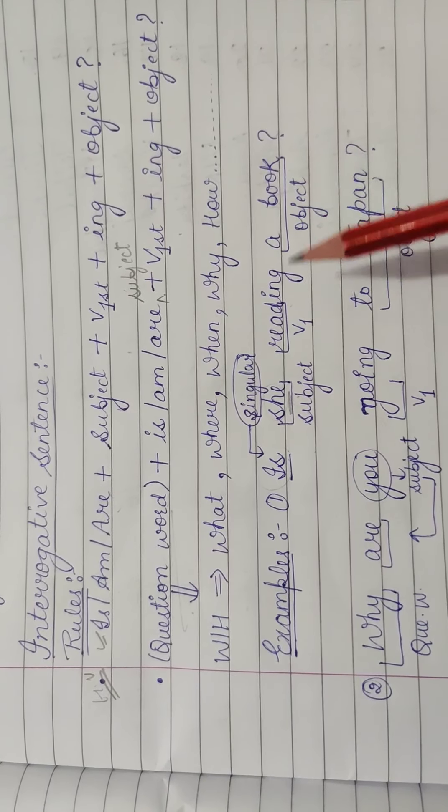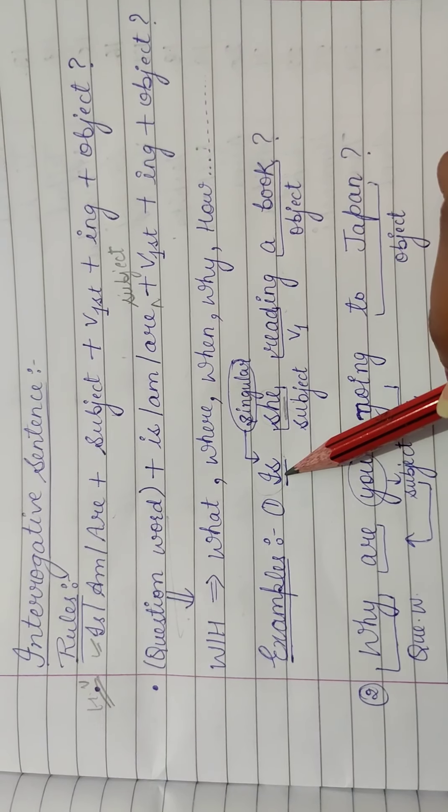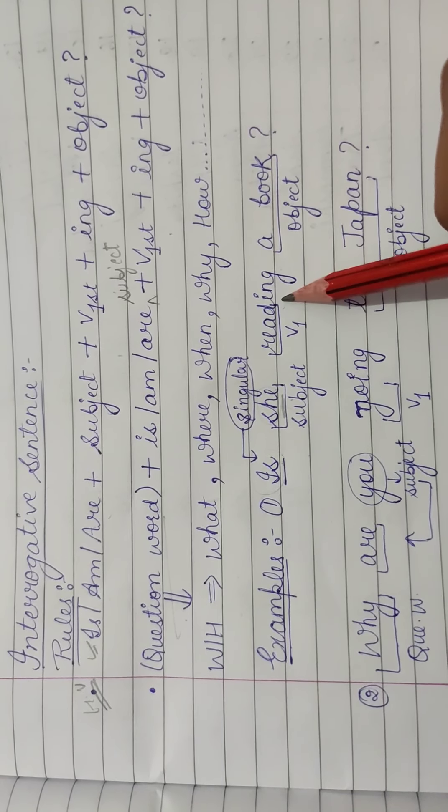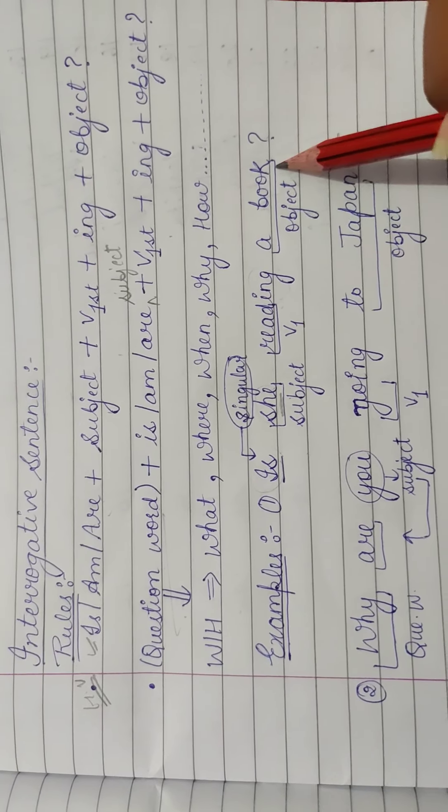To ye aapka question ban gya. To helping verb, aapke aagya aagayi. She singular hai, so is aagya hai. Phir wohi verb ke first form, ing, and then object.